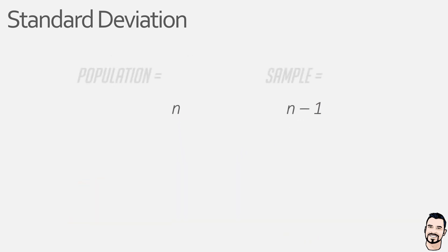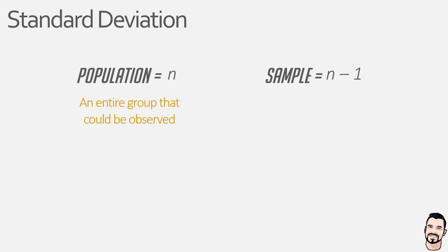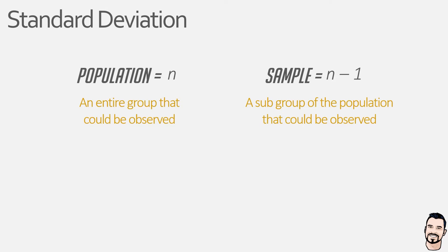A population in scientific terms refers to much more than a group of people — it is essentially an entire group that could be observed, whereas a sample is a subgroup of the population that could be observed. Obviously, it's better to look at an entire population as it is more accurate, but sometimes this is not possible because the population is too big, the experiment is too costly, or it's too time consuming. For these situations, we use a sample of the population and use this to make inferences on the population as a whole.